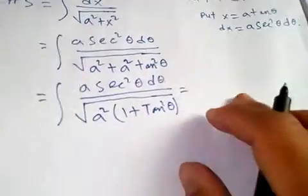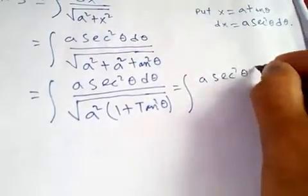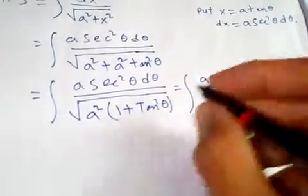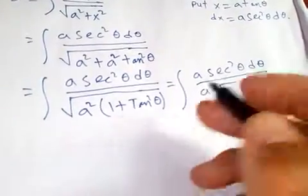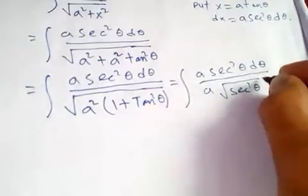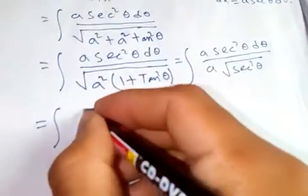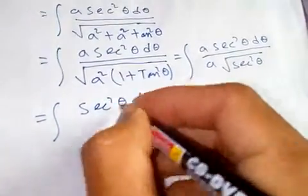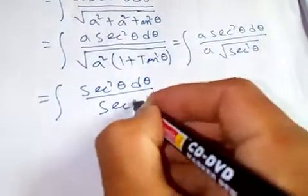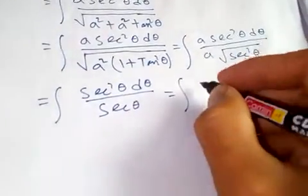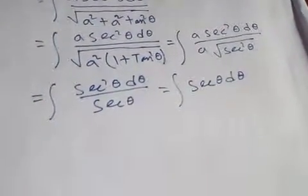So this becomes the integral of a·sec²θ dθ over square root of a squared times one plus tan squared theta. Now, square root of a squared is just a, and square root of one plus tan²θ is sec θ. The a's cancel out, leaving us with the integral of sec²θ dθ.